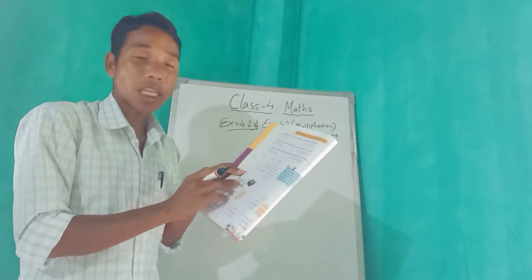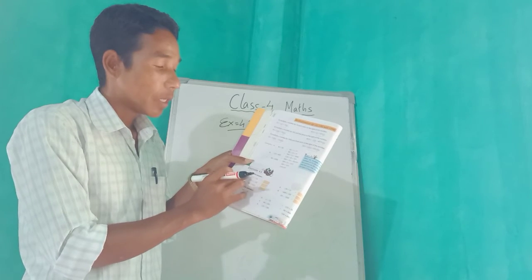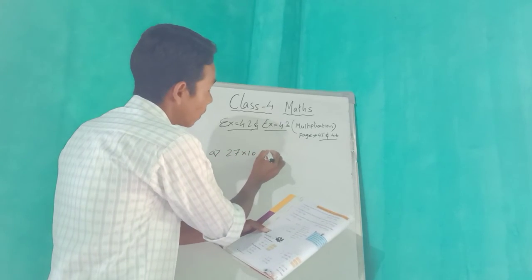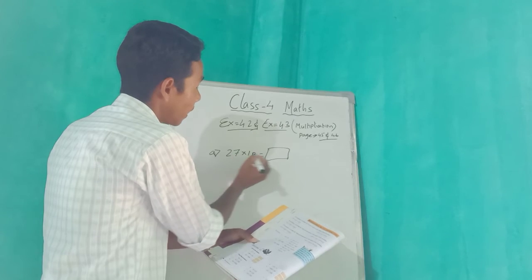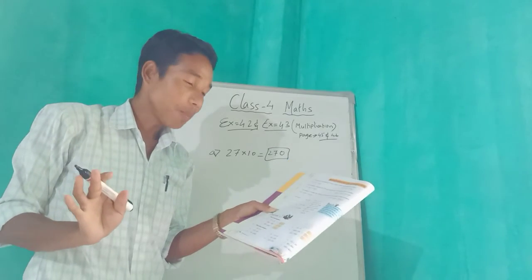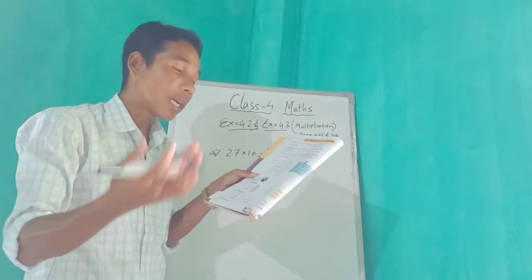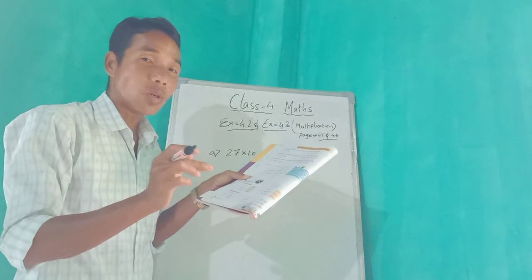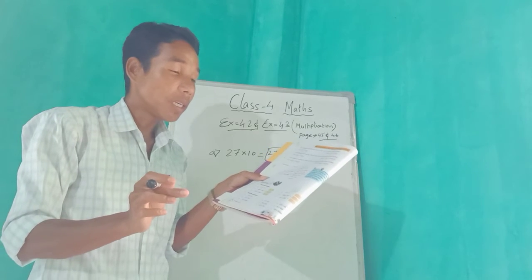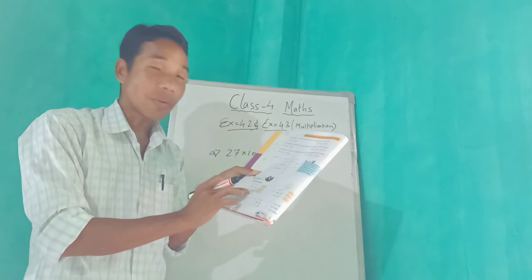Exercise 4.3: fill in the boxes. This is also very easy. See, 27 into 10 — just look: 27 into 10, you write 2 and 7 and then add a 0, so the answer is 270. Number B also: 178 into 10 — you just add a 0 directly, so 178 into 10 equals 1780. Try to do this one by yourself at home in your book.